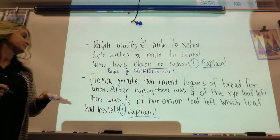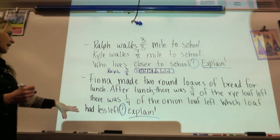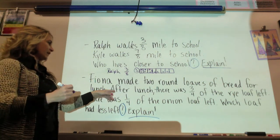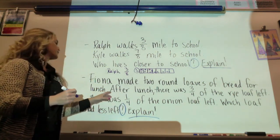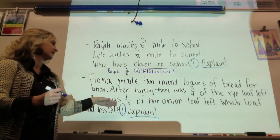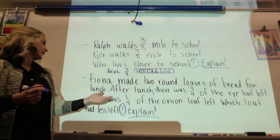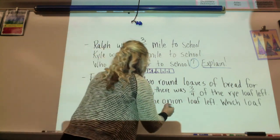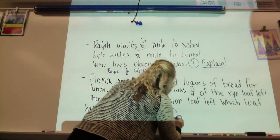That was a very good explanation. She said that the onion loaf would have less left, because if you drew a picture, you would see that the rye had three pieces left over, and the onion had one piece left over, and so it has less. And I'm going to go ahead and draw it.